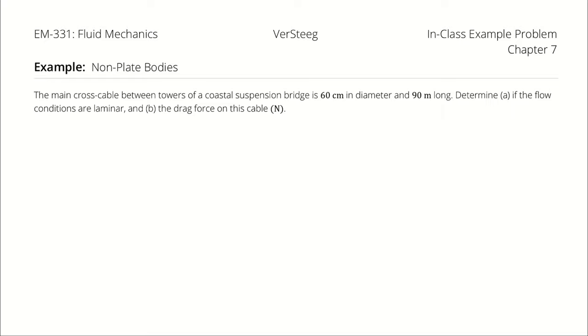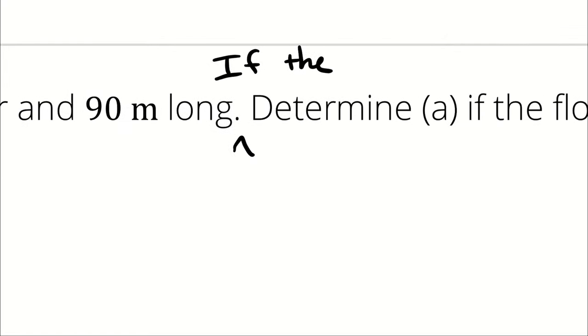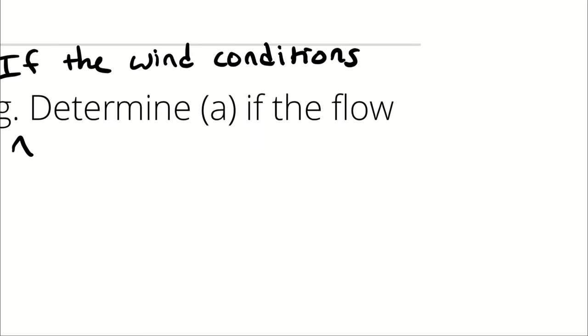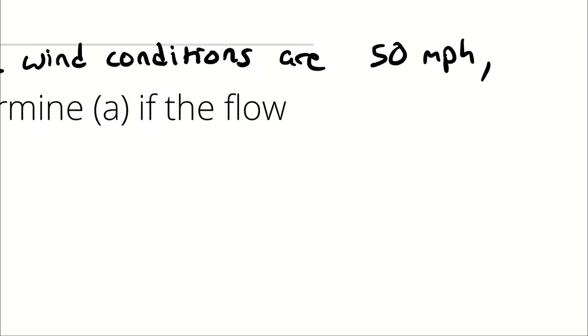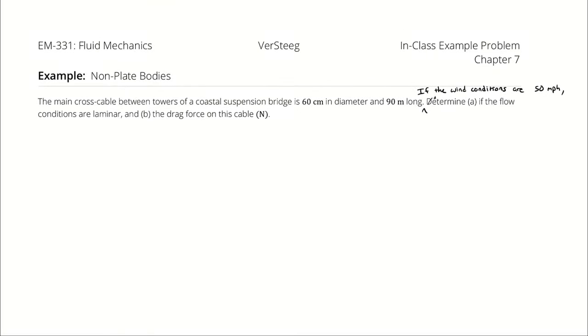Well first of all I didn't give us a velocity so let's add that in. So if we had a 50 mile an hour average wind, what would the load be and is that flow going to be laminar around the cable or not?